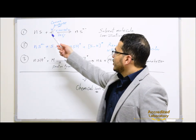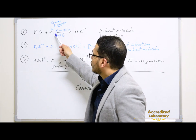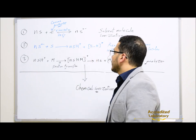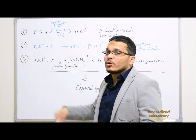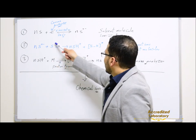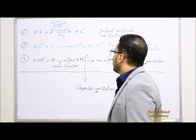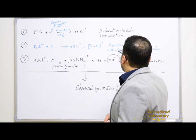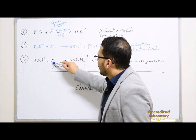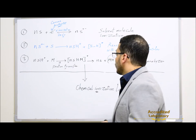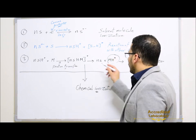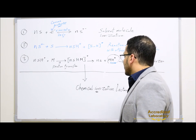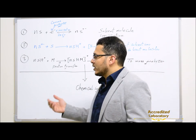As we see in this simple reaction, solvent molecules will be ionized by electrons produced from corona discharge through electron ionization to form solvent ions or molecular ions. These solvent ions then react with other solvent molecules; the solvent molecule loses a proton to form [NSH]+. This ion then reacts with the analyte molecule through proton transfer to form N-solvent molecule plus [MH]+, which is the analyte ion transferred to the mass analyzer.